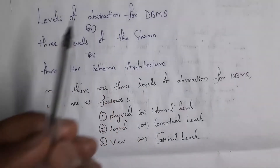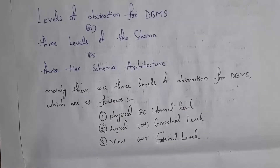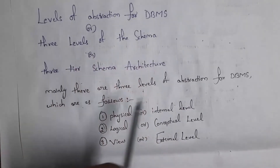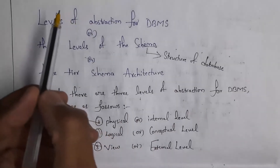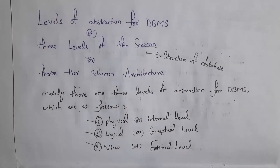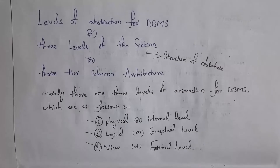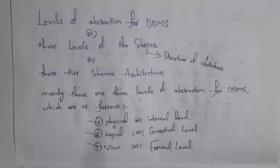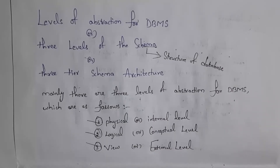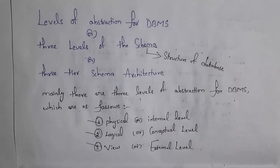We also call levels of abstraction as three levels of the schema, or three-type schema architecture. In exams, they may ask the question in different ways, so don't get confused. Schema is nothing but the structure of a database. In order to achieve data abstraction, we divide our database structure into three levels. These three levels are: first, physical level (also called internal level); second, logical level (also called conceptual level); and third, view level (also called external level).